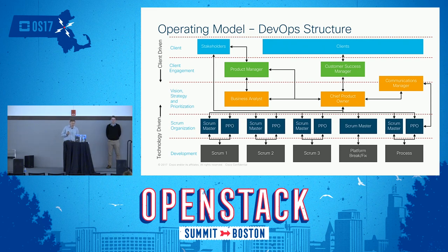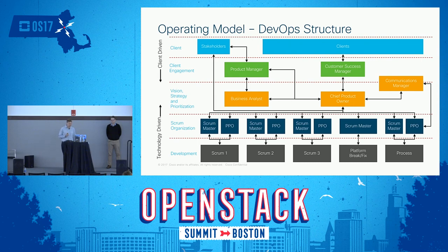We start with where our requirements come from — from a client-driven perspective. We have a customer success team and product managers who meet with clients and stakeholders to take their requirements. They feed that down into our strategy layer so we can understand what clients need. We then have a scrum structure in our development layer — co-mingled engineers and developers from development, operations, and architecture and design teams.